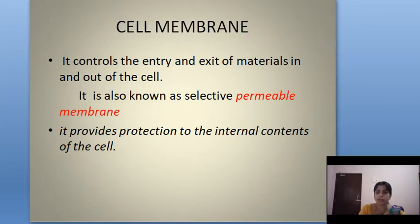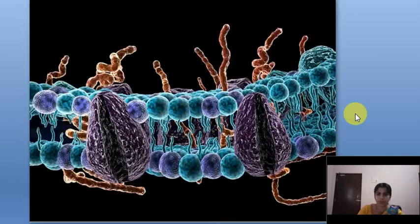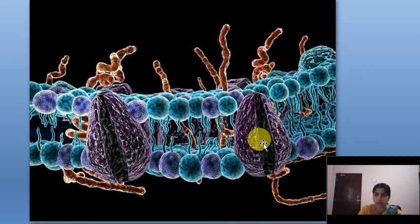The detailed structure of the cell membrane was studied only after the advent of the electron microscope in the 1950s. An improved model of cell membrane structure was proposed by Singer and Nicholson in 1972. It is widely accepted as the fluid mosaic model. The cell membrane is composed of lipids and proteins. The lipids form a bilayer at 40%, and proteins make up 52% of the cell membrane — these include integral proteins and peripheral proteins.